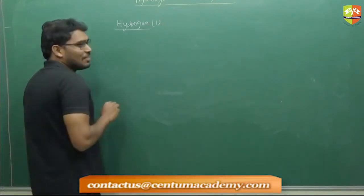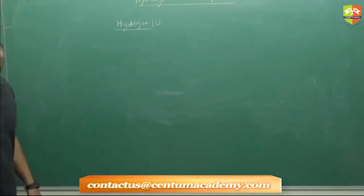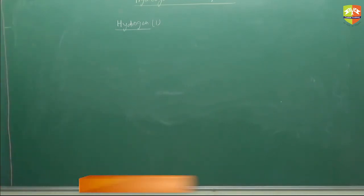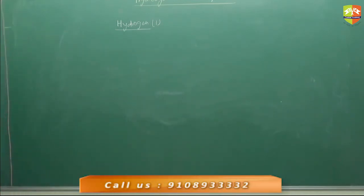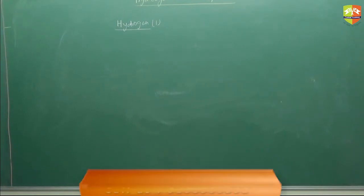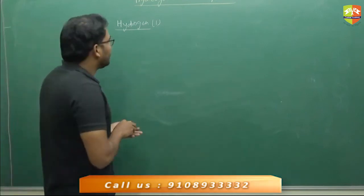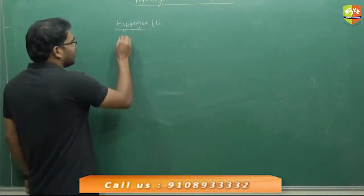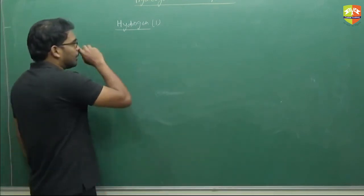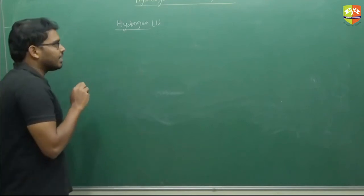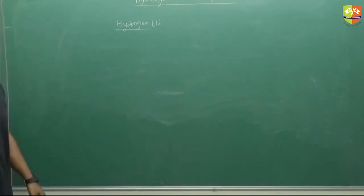What is the position of hydrogen atom in the periodic table? It has properties similar to alkali metals, but it's not as inclusive, so it's placed on top. Is it an alkali metal? No.